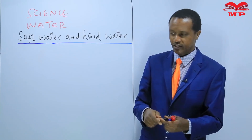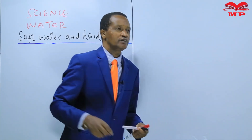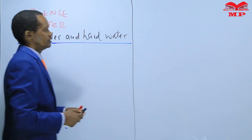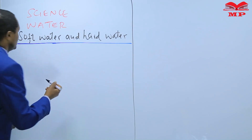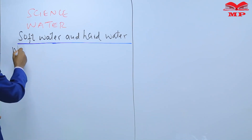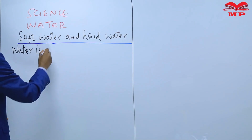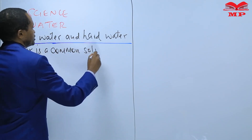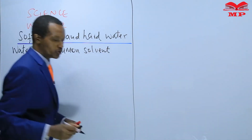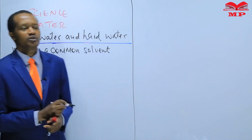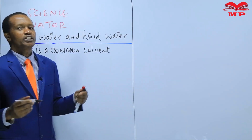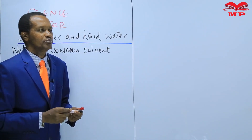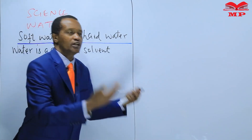Learners, just as we learned earlier in standard seven, water is a common solvent. We are building from what we learned. Water is a common solvent which is used in our homes for various tasks. For example, we use water as a solvent when washing our clothes.